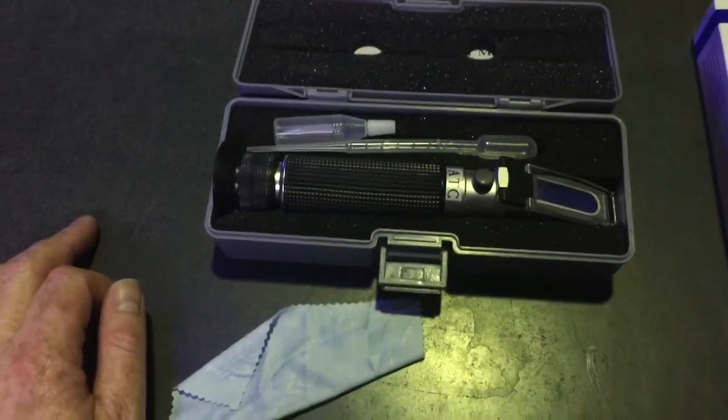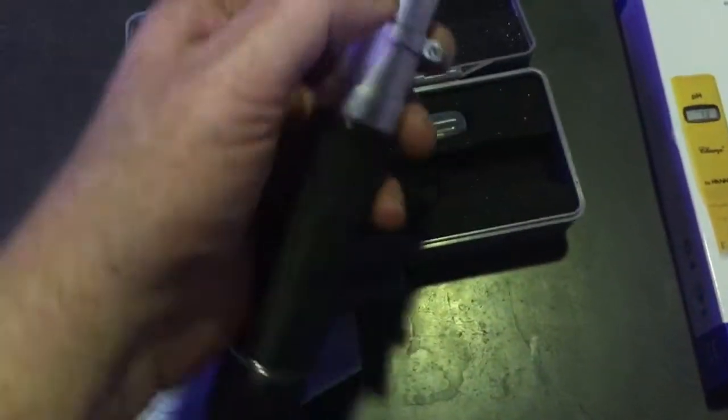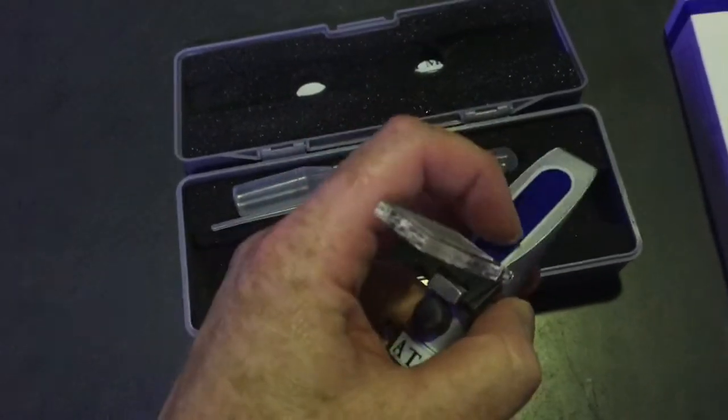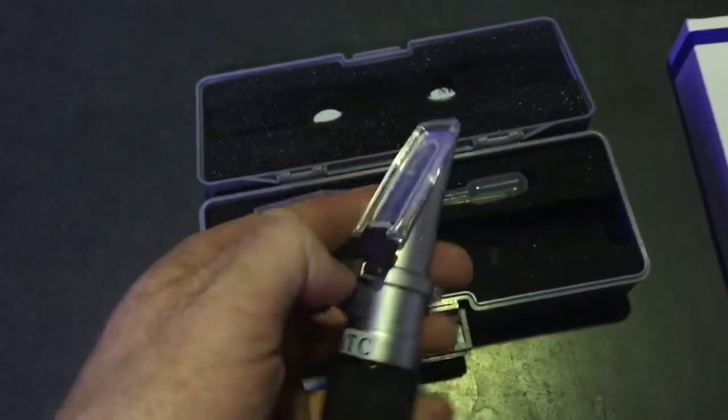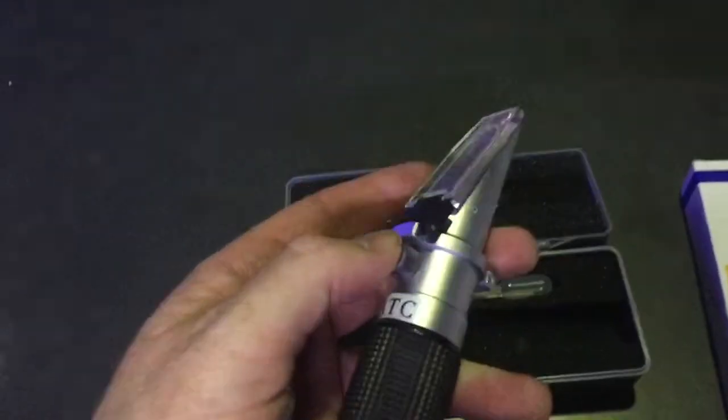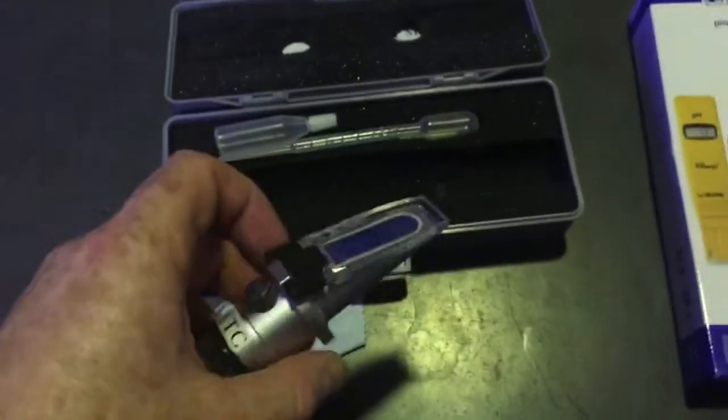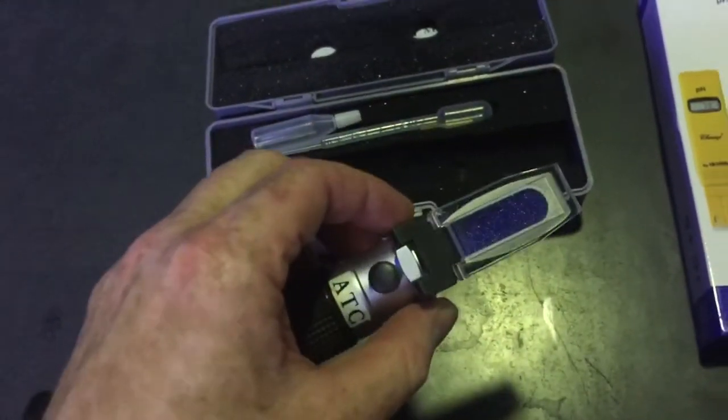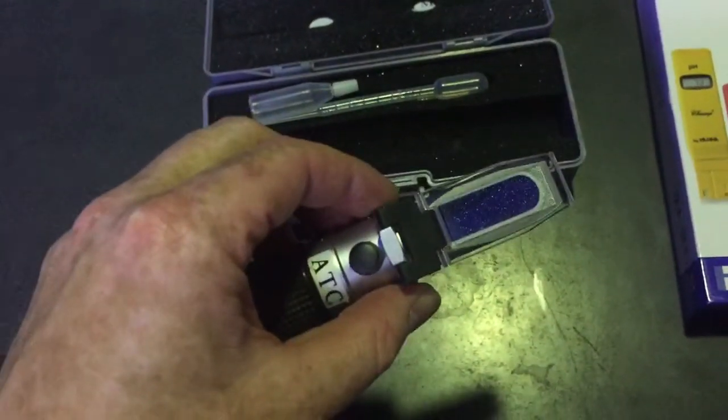But one thing to consider is that the end of your refractometer might be freezing cold or it might be hot. So when you take a little slither of water and you look down it, you may get a different reading because the end of the refractometer may be considerably warmer or colder than your tank.